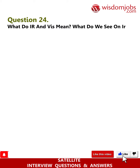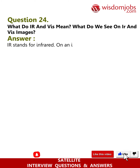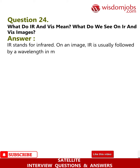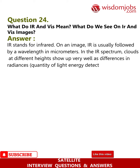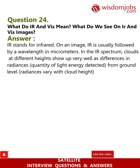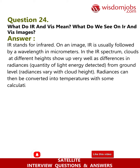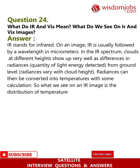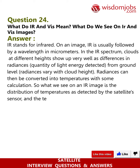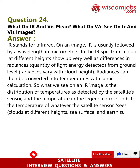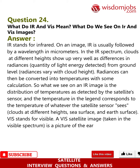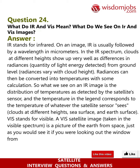Question 24: What do IR and VIS mean, and what do we see on IR and VIS images? IR stands for infrared. On an IR image, clouds at different heights show up very well as differences in radiances — the quantity of light energy detected. Radiances vary with cloud height and can be converted into temperatures. So on an IR image we see the distribution of temperatures of whatever the satellite sensor sees: clouds at different heights, sea surface, and earth surface. VIS stands for visible. A VIS satellite image taken in the visible spectrum is a picture of the earth from space, just as you would see it looking out the window of a spacecraft in orbit; during nighttime the picture is dark.